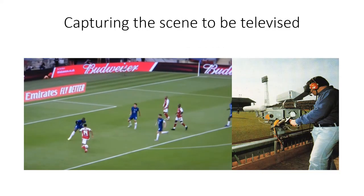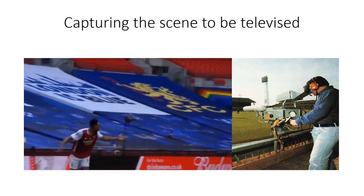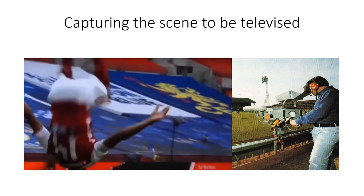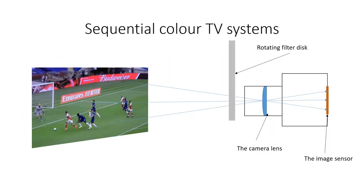In order to capture the scene to be televised, the TV camera collects the light from the scene as was described in the previous video, how black and white television works. We need red, green and blue picture content to make a complete color picture as we explained earlier.